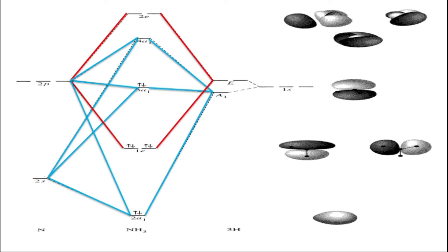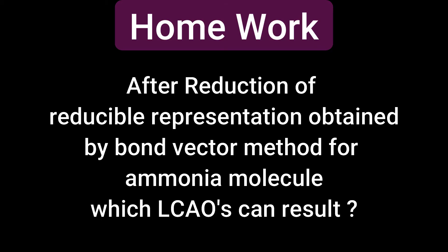For electron distribution: nitrogen has five valence electrons and three hydrogens contribute three electrons — eight electrons total. These fill as: 2a1 (2 electrons), 1e (4 electrons), and 3a1 (2 electrons). The 3a1, being non-bonding, holds the lone pair, which explains the lone pair and properties of ammonia through molecular orbital theory. The MO diagram for ammonia is now complete.